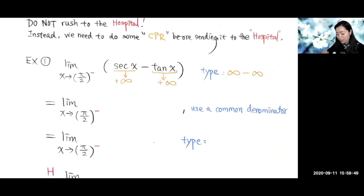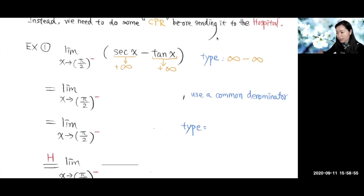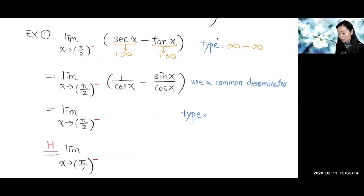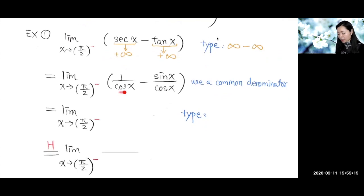We can rewrite secant and tangent in terms of sine and cosine. Secant of x is one over cosine x, and tangent x is sine x over cosine x. Once we write them this way, we can use a common denominator to combine them into one single quotient.